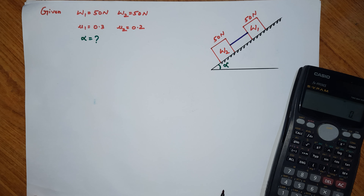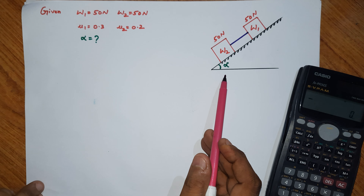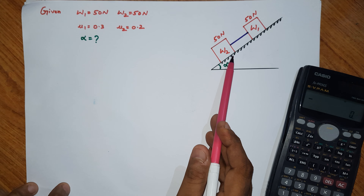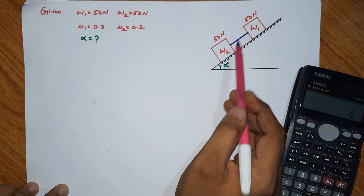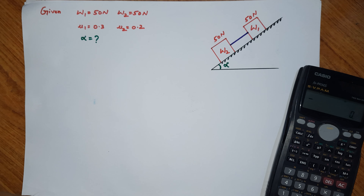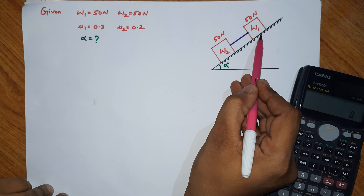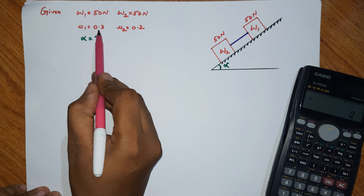Hello everyone, welcome to MCLadder. In previous videos we solved friction problems. Here is another friction problem: on an inclined plane, two blocks W1 and W2, each weighing 15 newtons, are connected by a string. The inclined plane makes angle alpha with the horizontal. We need to calculate alpha when the blocks are about to impend motion.